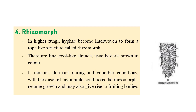The last vegetative reproductive structure is the rhizomorph. This is a root-like or rope-like structure where hundreds of individual hyphae aggregate or combine together. It is a vegetative reproductive structure produced by fungi like Ganoderma lucidum and Armillaria. This structure helps the fungus survive during unfavorable environmental conditions, and when favorable conditions return it germinates to produce a new fungus. Individual hyphae measure around four micrometers in diameter, and roughly a thousand hyphae aggregate to form the rhizomorph structure.